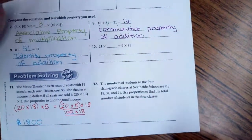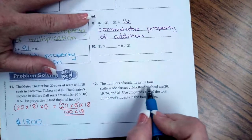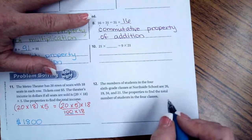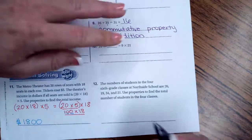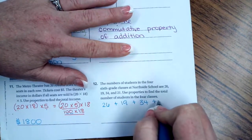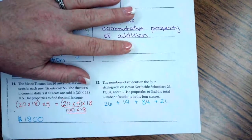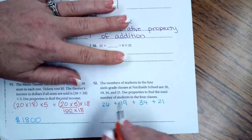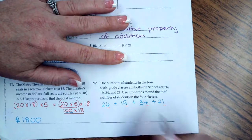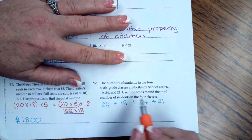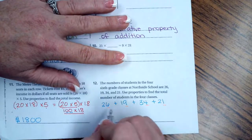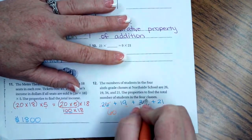We're going to go over to number 12 and says the numbers of students at the four sixth grade classes in Northside School are 26, 19, 34, and 21. Use properties to find the total number of students in the four classes. So we have 26 plus 19 plus 34 plus 21. Now I am going to look at the last numbers in each one of these problems. So I'm going to underline my six, my nine, my four, and my one. Because I know that six and four are 10. So if I have two plus three, that's five plus the extra 10 that the six and the four make, that's going to be six. So now I'm going to have 60 and I don't have to deal with those two anymore.